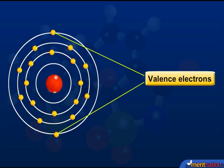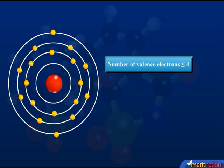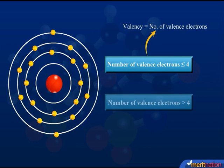For representative elements having less than or equal to 4 valence electrons, the valency is equal to the number of valence electrons. And for elements having more than 4 valence electrons, the valency is 8 minus the number of valence electrons.